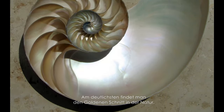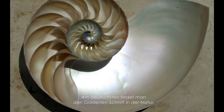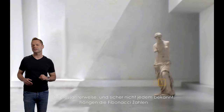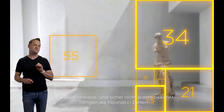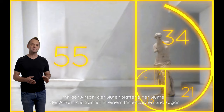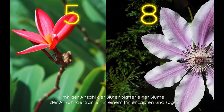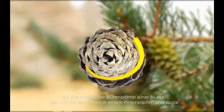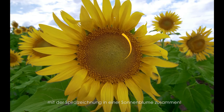One of the most obvious places you can see the golden ratio is in nature. Interestingly, many people don't know this, but these Fibonacci numbers correspond to the number of petals on a flower, seeds in a pine cone, and even spirals in a sunflower.